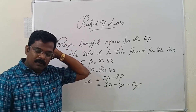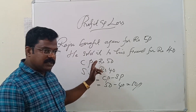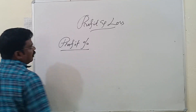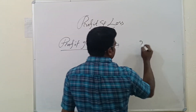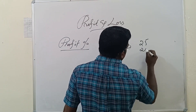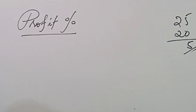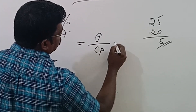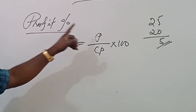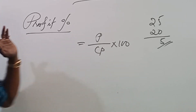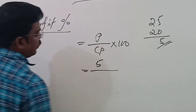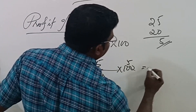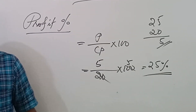We have to compare cost price and selling price to decide whether there is a profit or loss. Now, profit percentage — how can we find it? Profit percentage equals profit divided by cost price, into 100. Whenever we calculate profit or loss percentage, we consider cost price only. So here profit is Rs.5 and cost price is Rs.20, so profit percentage equals 5 divided by 20 into 100, which equals 25%.